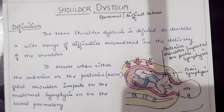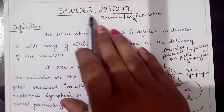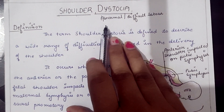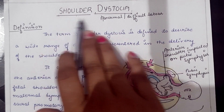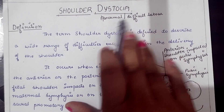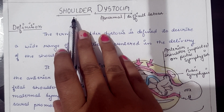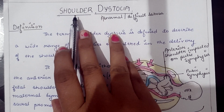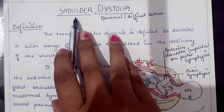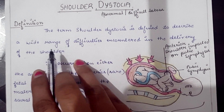In this video I will discuss shoulder dystocia. Dystocia means abnormal or difficult labor. Shoulder dystocia is when there is a failure of the spontaneous delivery of the shoulders, and additional maneuvers are required to deliver the shoulders.